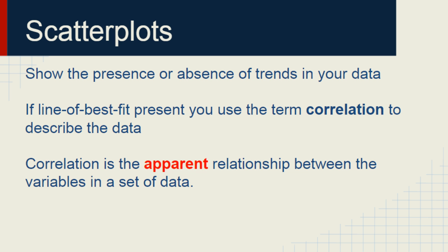The other thing you can use with a Scatter Plot is a Line of Best Fit, and if there's a Line of Best Fit that works for your data, you can use the term correlation. What is correlation? It is an apparent relationship between two variables in a set of data.